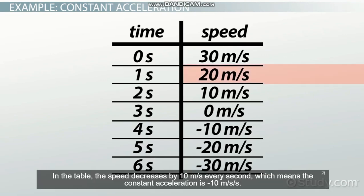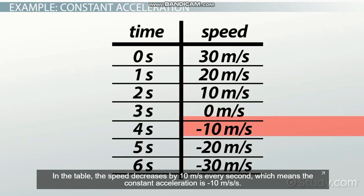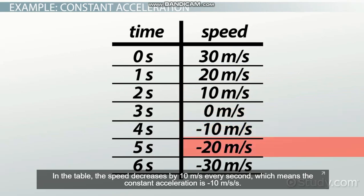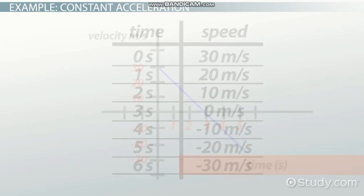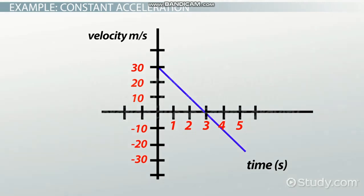In the table, the speed decreases by 10 meters per second every second, which means the constant acceleration is negative 10 meters per second per second. This graph shows the data in the table plotted as speed versus time.